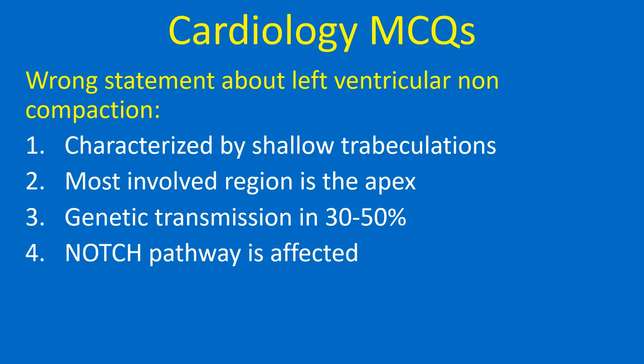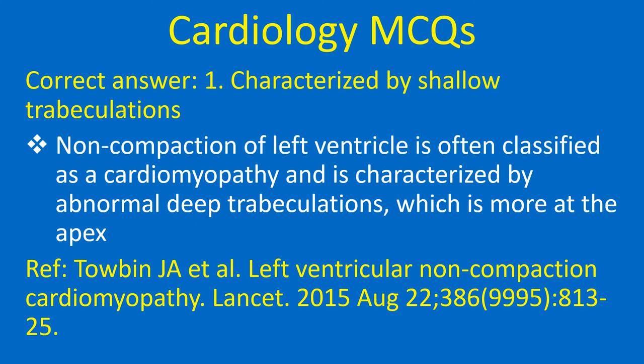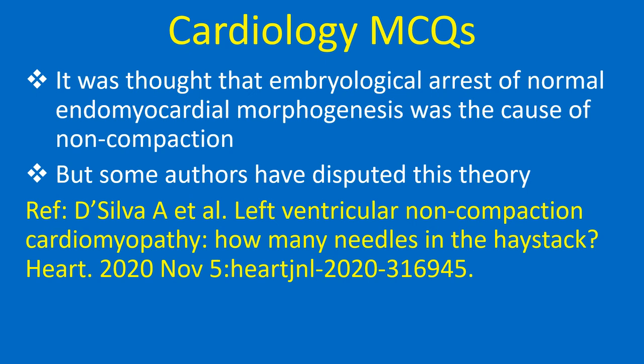Wrong statement about left ventricular non-compaction: 1. Characterised by shallow trabeculations, 2. Most involved region is the apex, 3. Genetic transmission in 30–50%, 4. Notch pathway is affected. Correct answer: 1. Characterised by shallow trabeculations — this is wrong. Non-compaction of the left ventricle is characterised by abnormal, deep trabeculations, more prominent at the apex. It was thought that embryological arrest of normal endomyocardial morphogenesis was the cause of non-compaction, but some authors have disputed this theory.